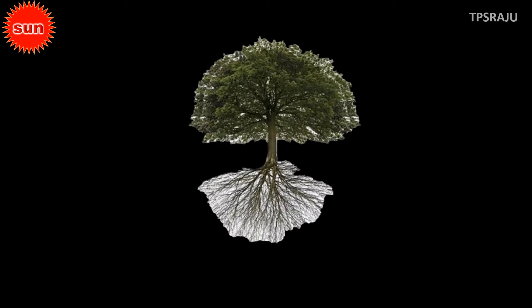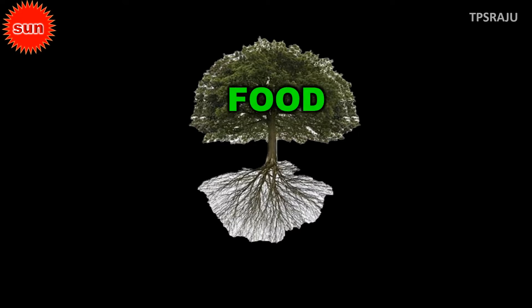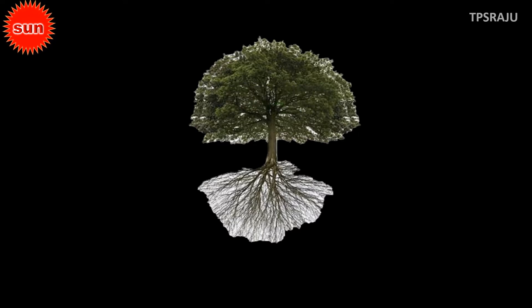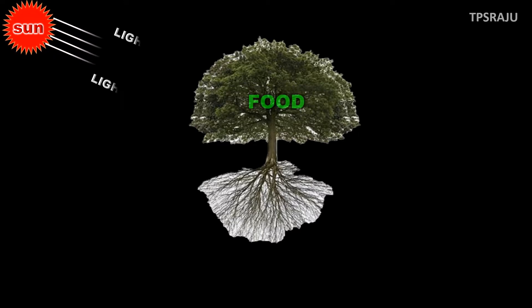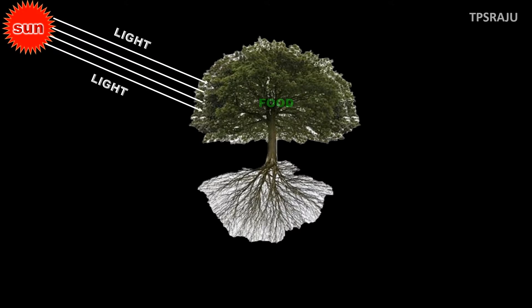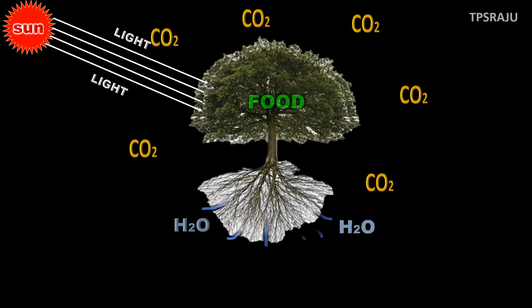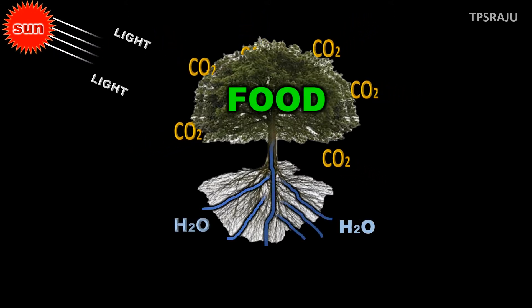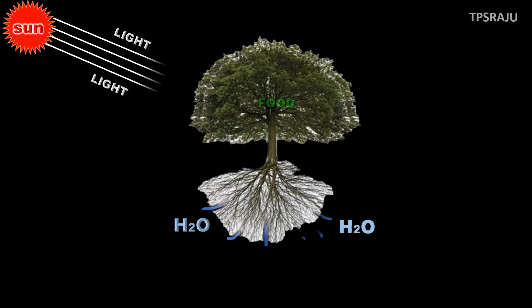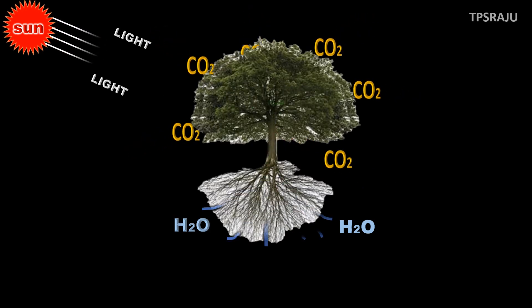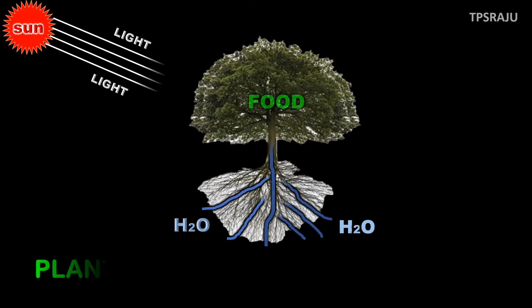Plants can produce their food on their own. They do not depend on other living organisms for their food requirements. They produce their food by utilizing light energy from the sun, carbon dioxide from air, and water from soil. So we call plants as producers.